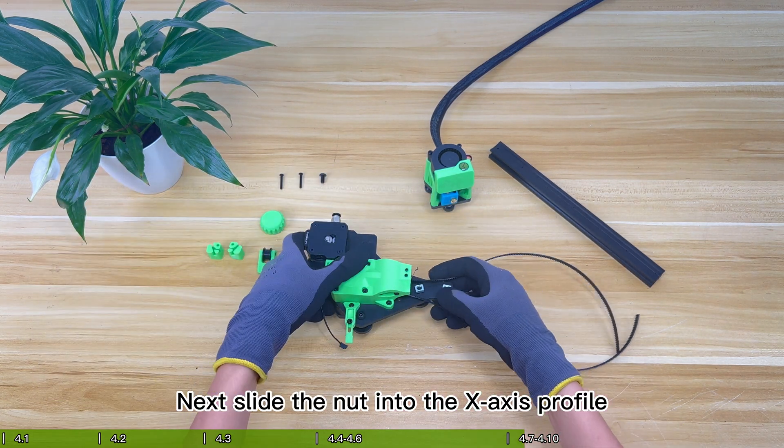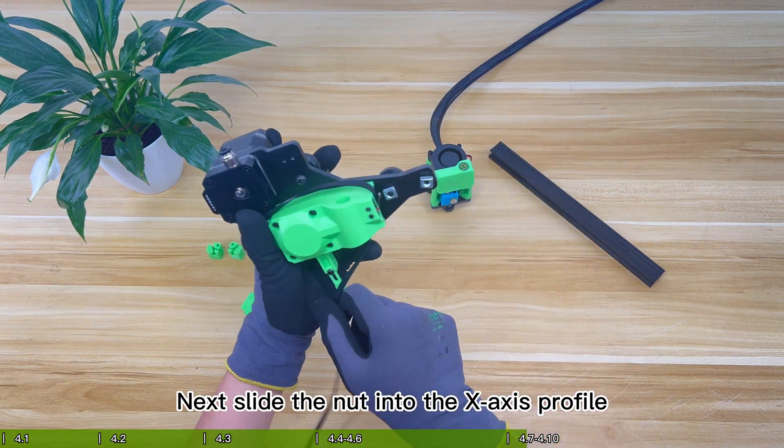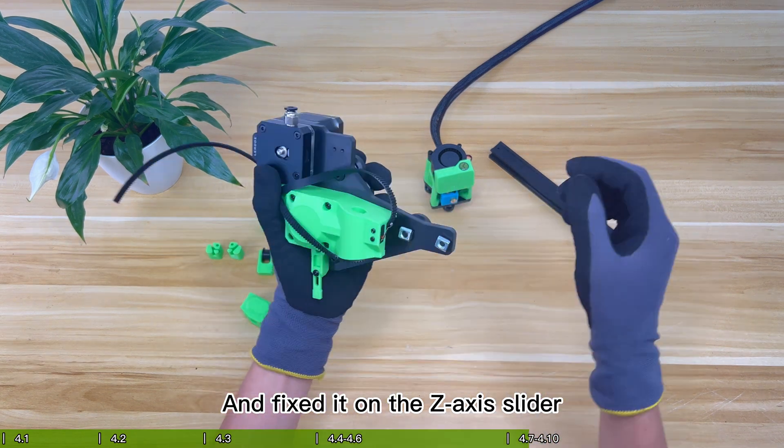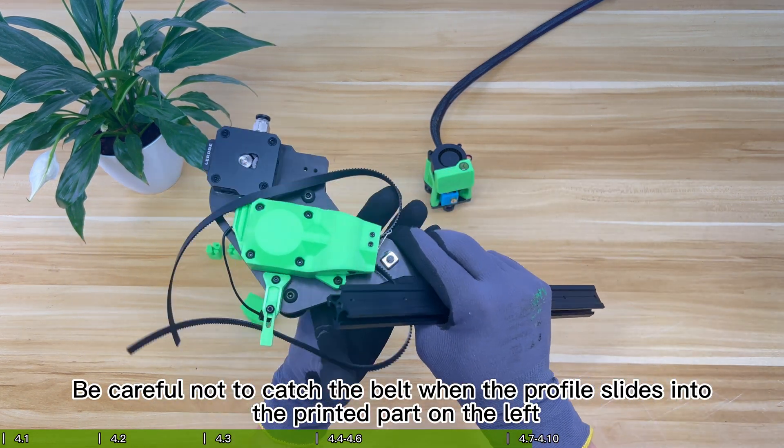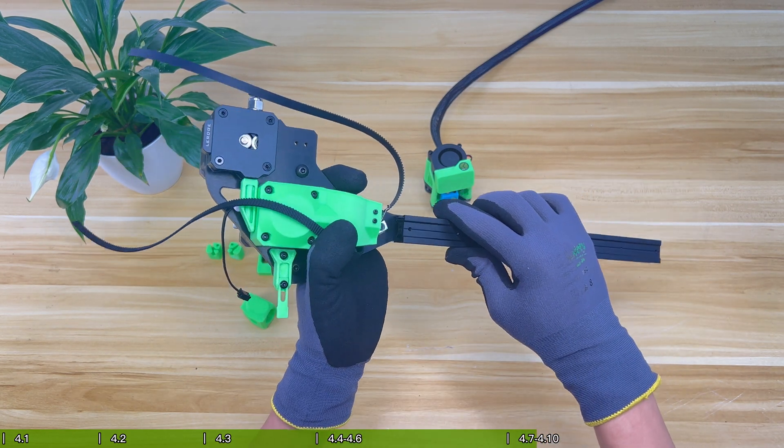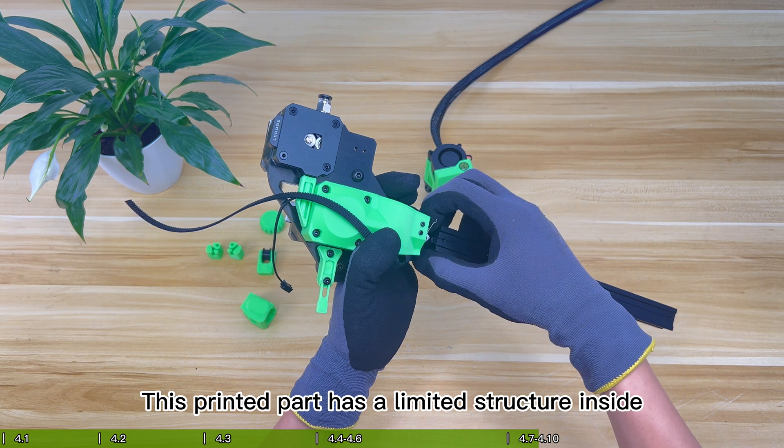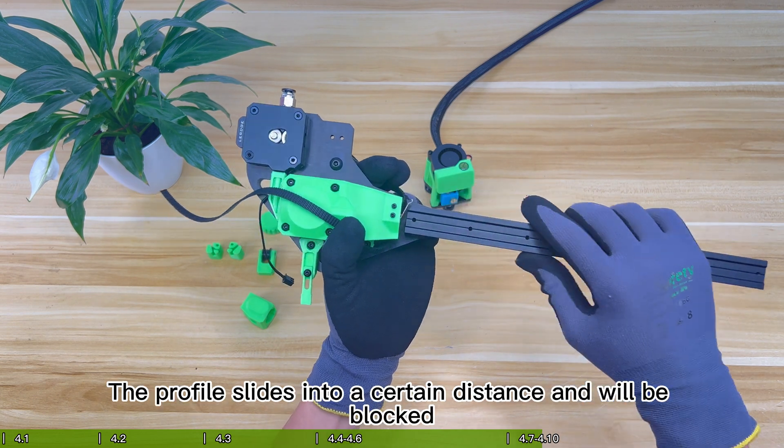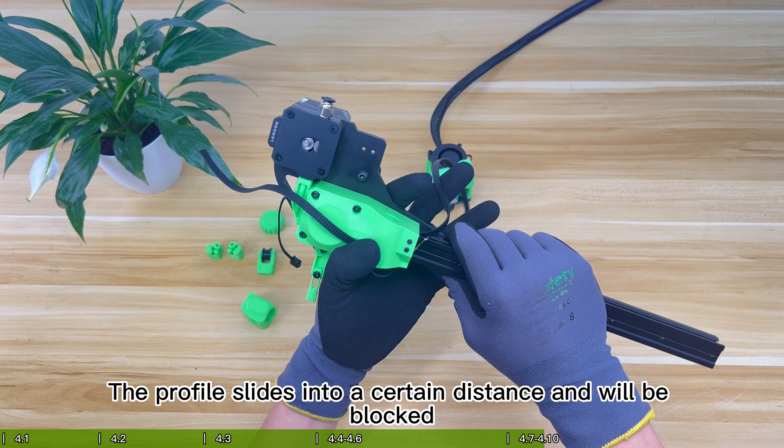Next slide the nut into the X-axis profile and fix it on the Z-axis slider. Be careful not to catch the belt when the profile slides into the printed part on the left. This printed part has a limited structure inside. The profile slides into a certain distance and will be blocked.